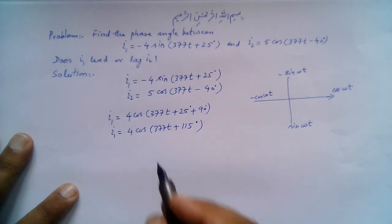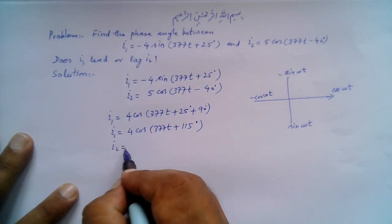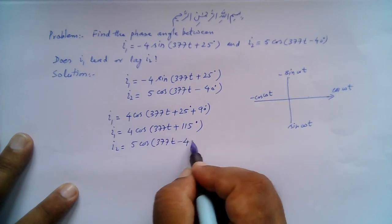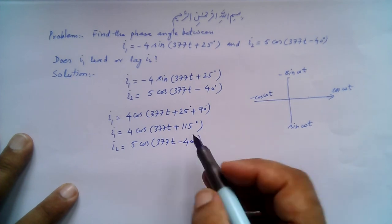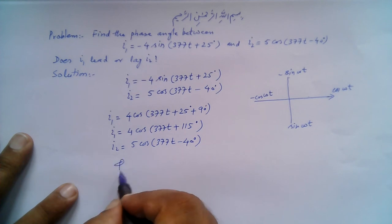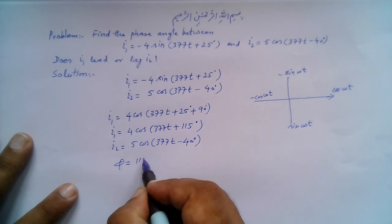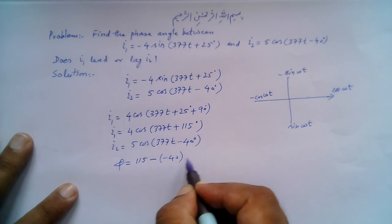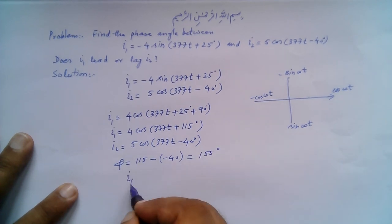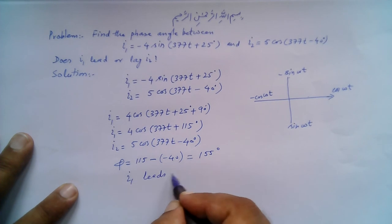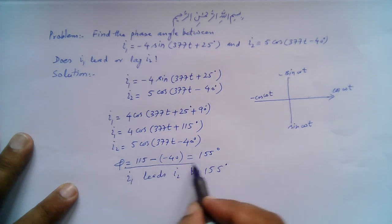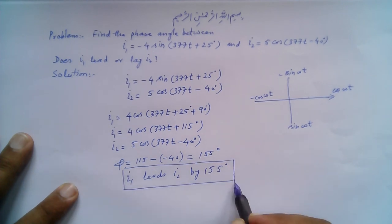Now it is easier to compare. i1 = 4cos(377t + 115°) and i2 = 5cos(377t - 40°). As you can see, i1 leads i2. The phase difference φ = 115° - (-40°) = 155°. So i1 leads i2 by 155°. That concludes the solution of this problem.